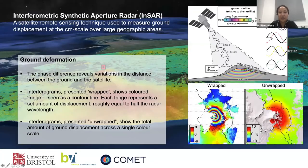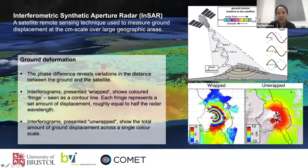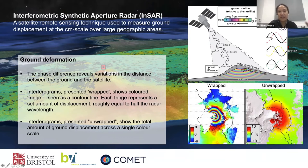InSAR is a technique using a radar signal sent from the same satellite at the same location but different times. So if the ground is stable, the return signal at time 2 should be the same as at time 1. But if the ground moves, as seen here, the phase of the return signal at time 2 is different from the signal at time 1. So when we subtract these two signals, the phase difference will show us fringes in the image.